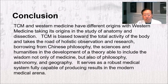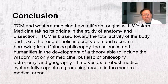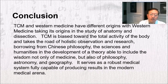In conclusion, TCM and Western medicine have different origins — with Western medicine taking its origin in the study of anatomy and dissection, TCM is biased toward the total activity of the body and takes the road of holistic observation and research. Drawing from Chinese philosophy, the sciences and humanities, in the development of theory able to include the wisdom not only of medicine but also of philosophy, astronomy, and geography, TCM serves as a robust medical system fully capable of producing results in the modern medical arena.